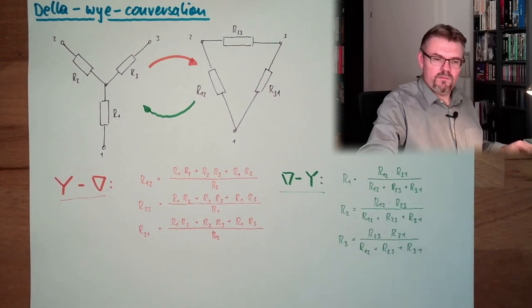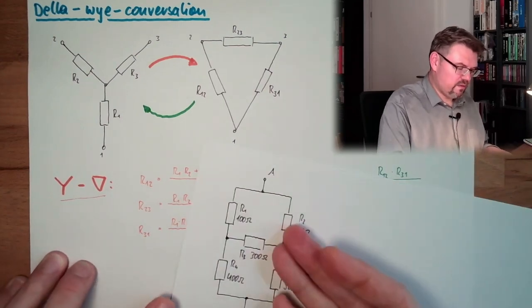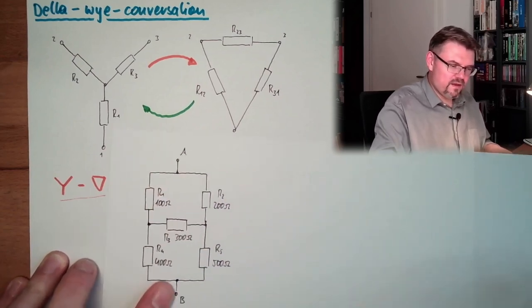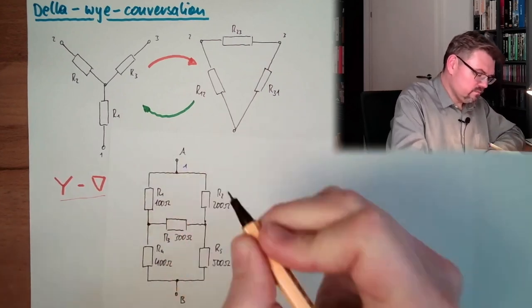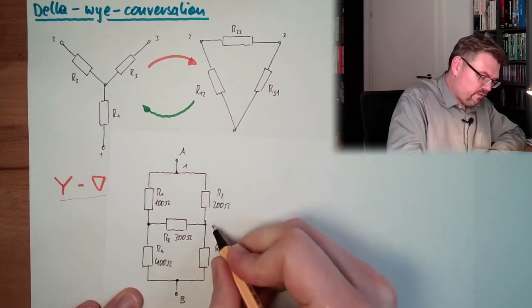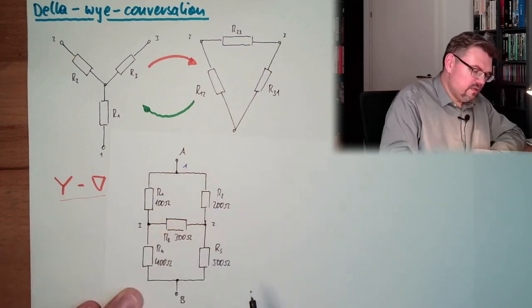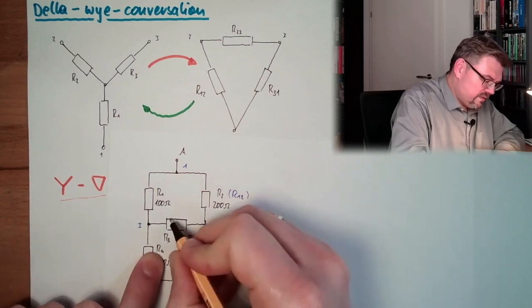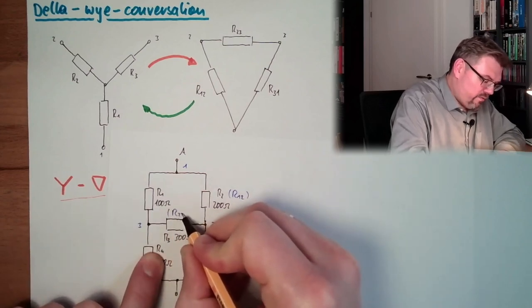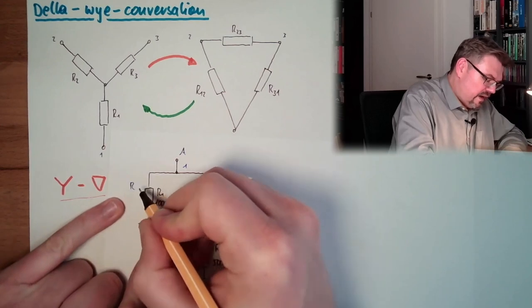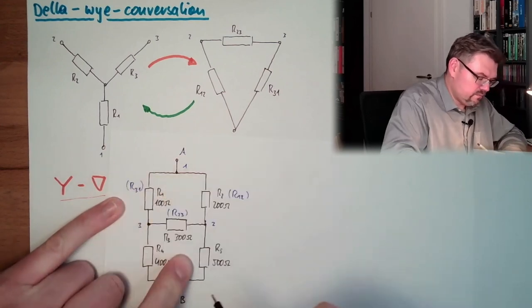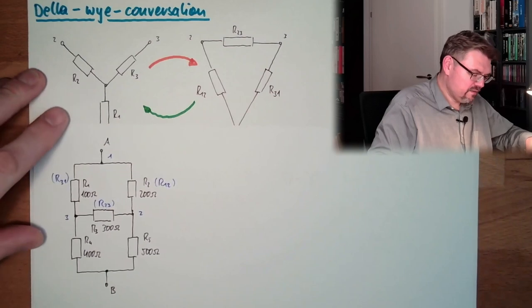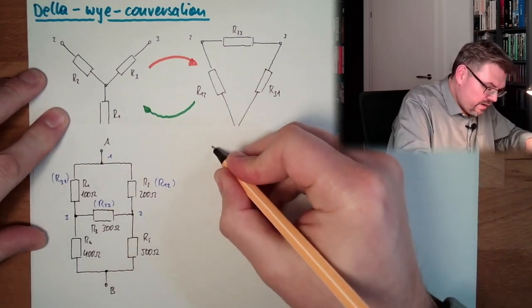How is this helping my case here? Well, I have here a delta. You see this? I have here point 1, I have here point 2, I have here point 3. So actually, this is basically r12, this is r23, and this is r31. And now I can transform this to a Y.